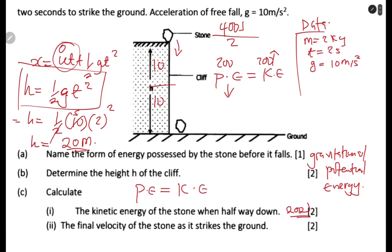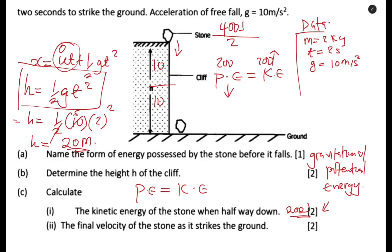You are supposed to start by calculating the potential energy, then state that all energy at the top is in the form of potential energy. As it falls halfway down the cliff, potential energy equals kinetic energy. Therefore, kinetic energy at the halfway point is 200 joules.